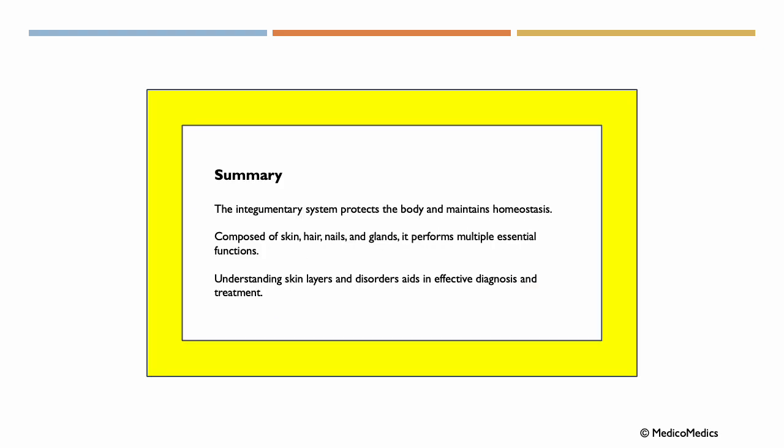So in summary, the integumentary system protects the body and maintains homeostasis. It is composed of skin, hair, nails, and glands. And it performs multiple essential functions. Understanding skin layers and disorders aids in effective diagnosis and treatment.